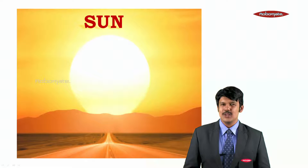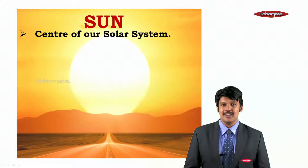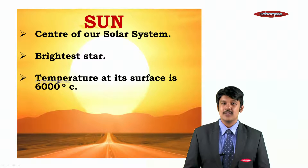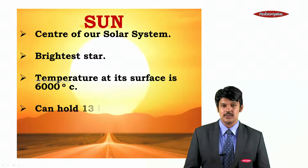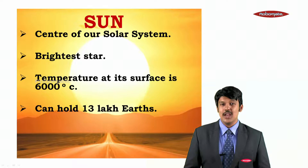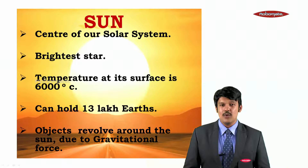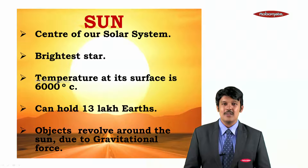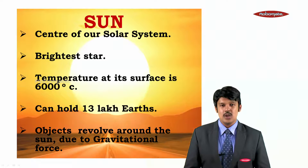The first is the sun. Let us learn some facts about our sun. We all have seen the sun — we know it's a very bright star. The sun is the center of our solar system and it is the brightest star. The temperature at the surface of the sun is 6,000 degrees Celsius — it's really very hot. It can hold up to 13 lakh Earths. All objects revolve around the sun due to gravitational force. These are some facts about the sun.